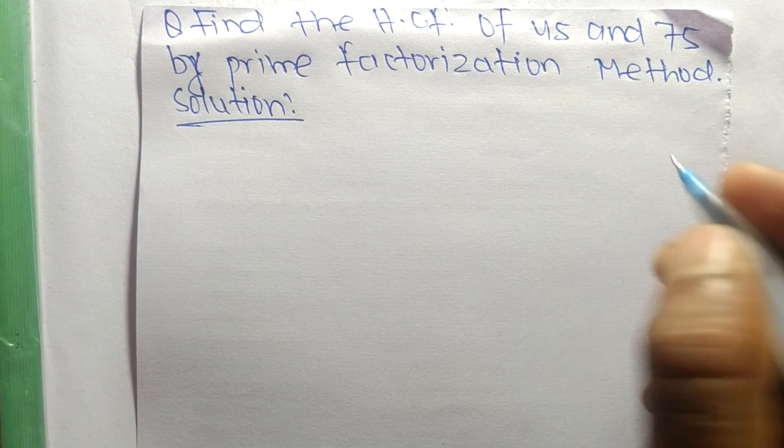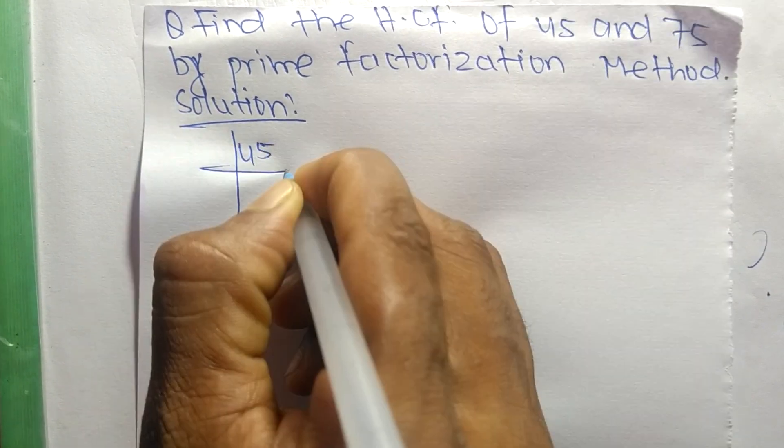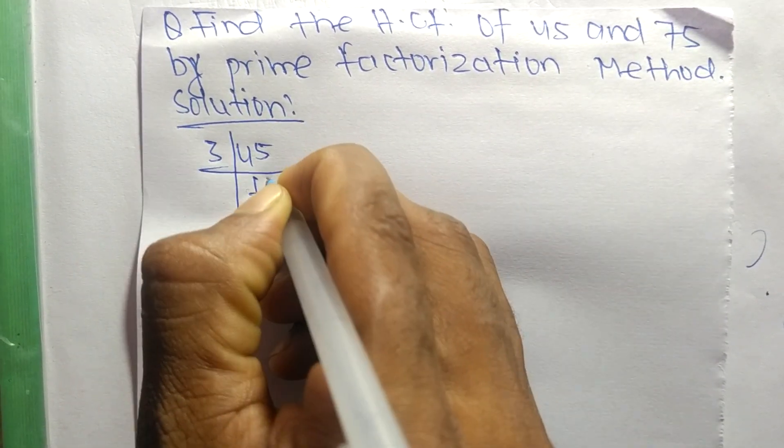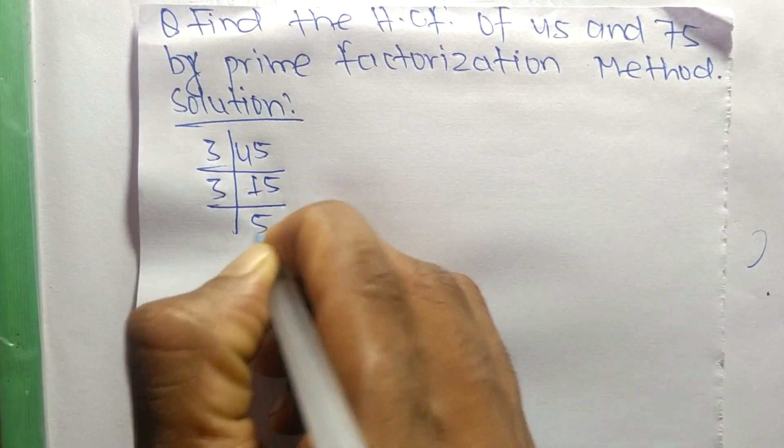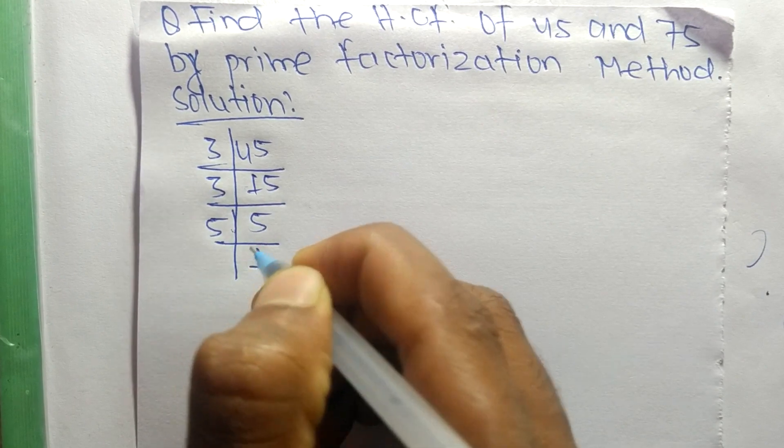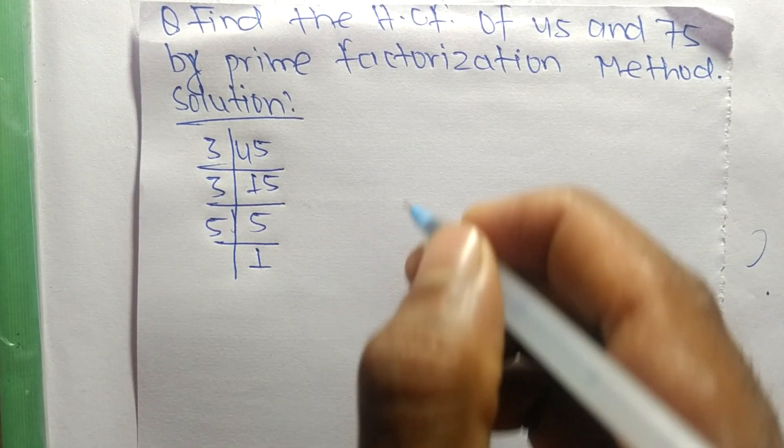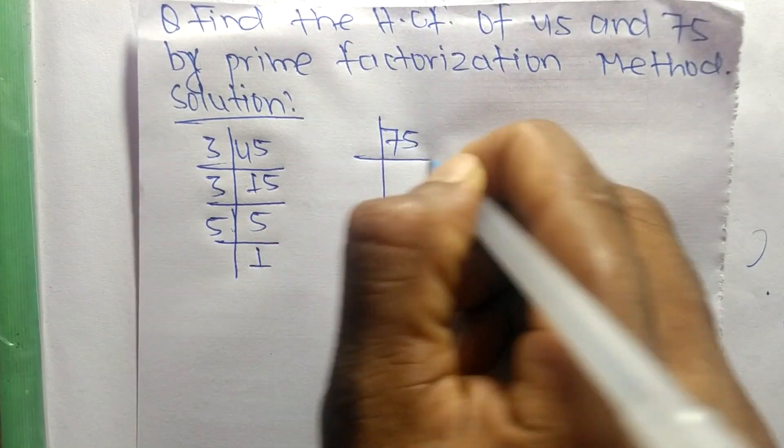First, we find out the prime factors of 45. It is 3 times 15, which means 45. Then 3 times 5 means 15, and 5 times 1 means 5. Likewise, the prime factors of 75 are...